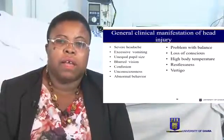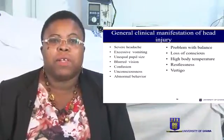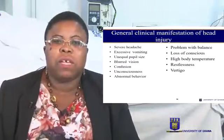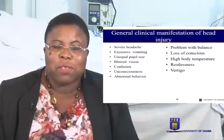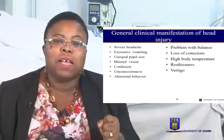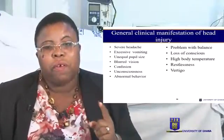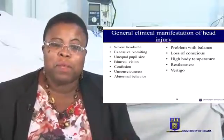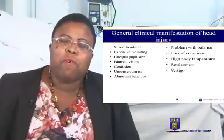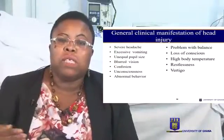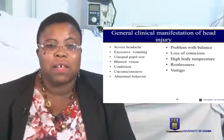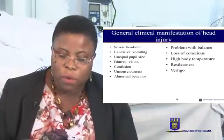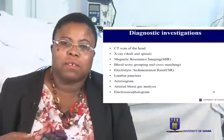If somebody has a head injury, some general signs could include headache, vomiting, and vision issues. If you know your cranial nerves well and there is a problem with the head, some of these nerves are affected — you use what the nerves do to identify the problems a person can manifest. So confusion, behavior changes, loss of consciousness, temperature irregularities, restlessness — the cranial nerves have described it all already.